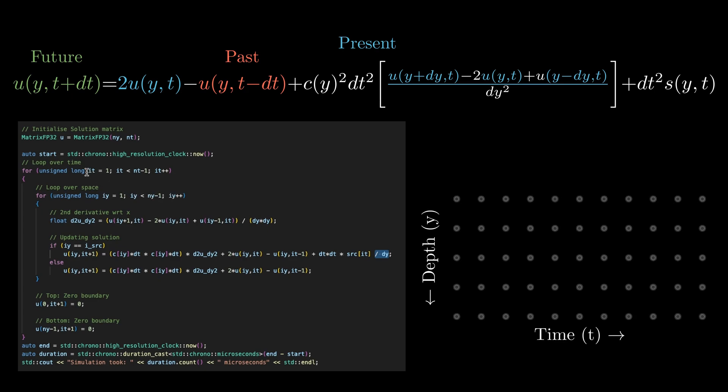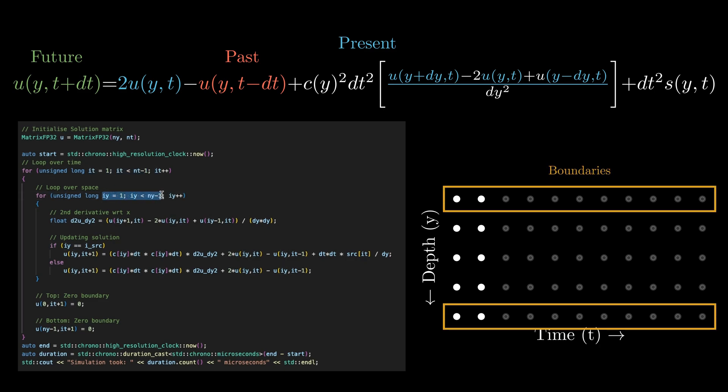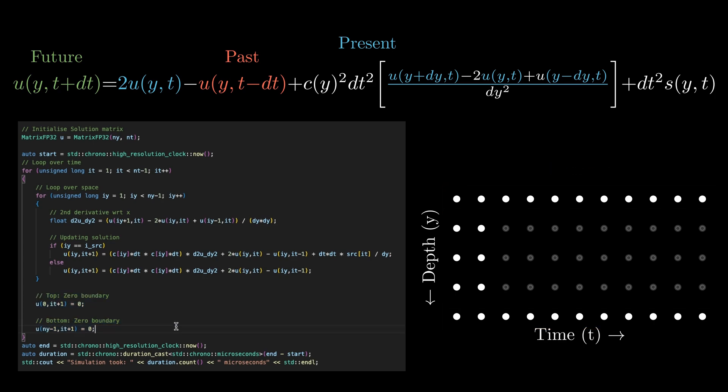For this simulation to run correctly, the first two time steps must be known. Setting these to zero was fine because there was no energy in the system before an earthquake. Other than this, the endpoints along y need to be defined as well. I assumed that to be zero at this stage. That's about it. Now the program will loop over the grid points one by one and update the solution matrix.